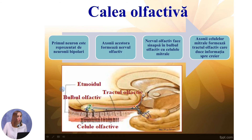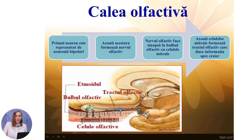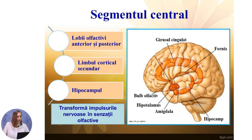Calea olfactivă: primul neuron este reprezentat de celulele olfactive, care reprezintă neuroni bipolari, axonii cărora formează nervul olfactiv. Nervul olfactiv face sinapsă în bulbul olfactiv cu celulele mitrale, axonii acestora formând tractul olfactiv care duce informația spre creier. Segmentul central îl formează lobii olfactivi anterior și posterior, limbul cortical secundar, hipocampul, ce transformă impulsurile nervoase în senzații olfactive.